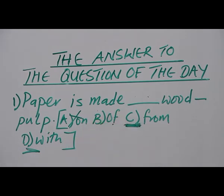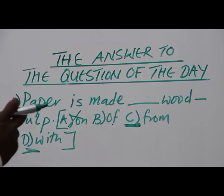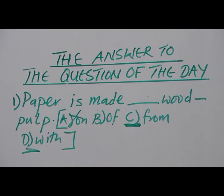Now what about from? We use from to express the substance that is extracted from a thing. Now we use from to extract the substance that is extracted from a thing. For example, in this case, paper is made from wood pulp.